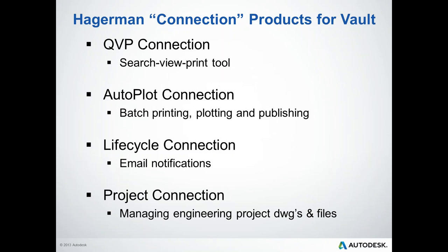The Hagerman Connection products are software products we've developed, with about 15 years of experience in software development. We'll be discussing QVP Connection, a search-view-print tool for Vault; AutoPlot Connection, a tool for batch printing and plotting — products we've had out for probably 10 years or more. LiveCycle Connection is a new one for email notifications in conjunction with Vault lifecycle workflows. And Project Connection is new, under development and due to be released this fall, for managing engineering project drawings and separating project copies from as-built copies.